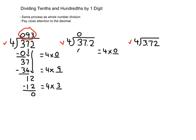4 times 0 is 0. We subtract 3 minus 0 and get 3. Same process — the 7 comes down next to the 3 to create the new number 37. How many groups of 4 can go into 37? 4 times what equals 37? The closest we can get is 9, so 9 goes over the 7. 4 times 9 is 36. We subtract that and have 1 remaining.